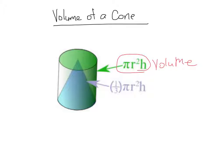And the volume of the cone that is within it with the same height and the same base area is one-third pi r squared times h. So with that in mind, let's go ahead and try an example.